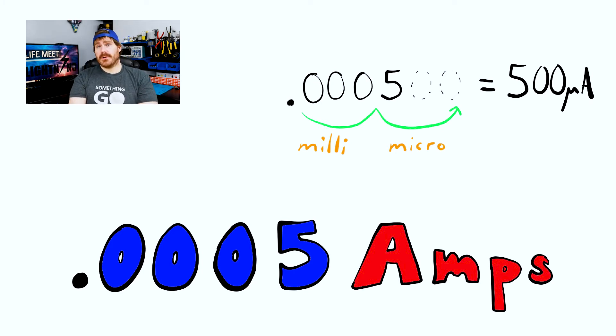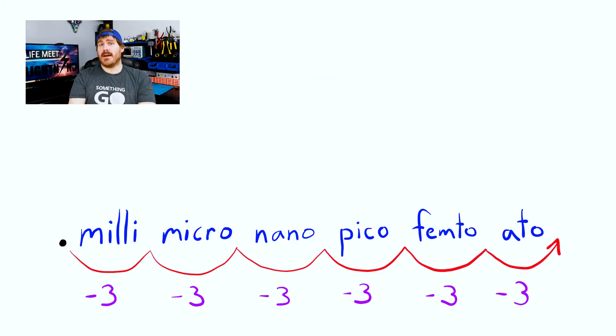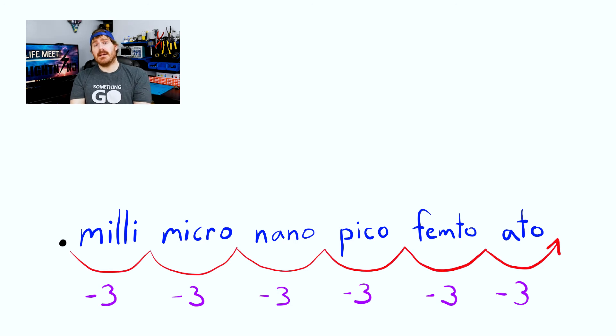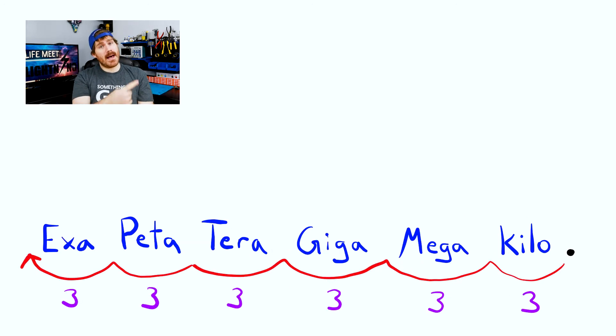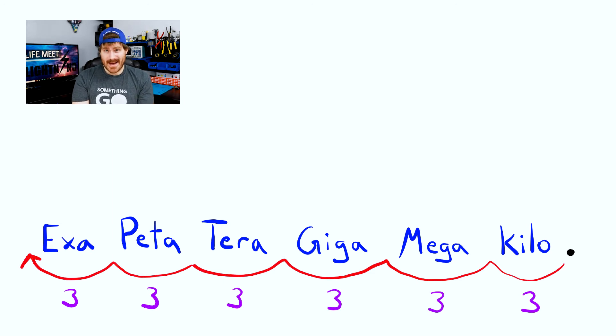If moving the decimal to the right, we have milli, micro, nano, pico, femto, ato. If moving the decimal to the left, we have kilo, mega, giga, tera, peta, exa.